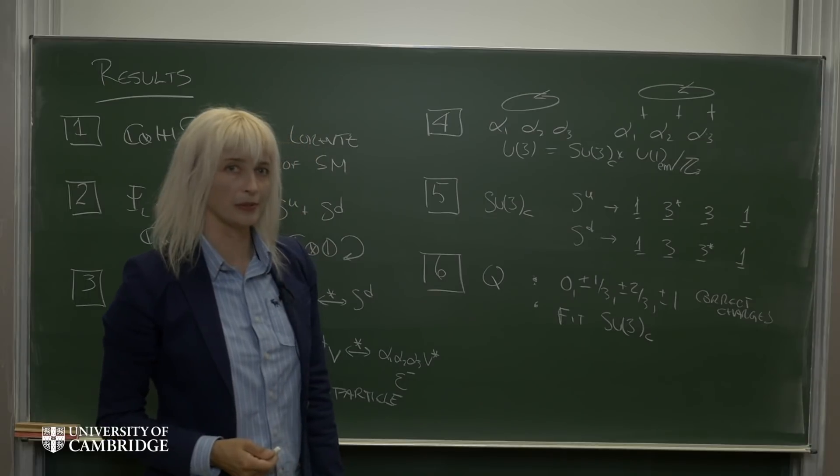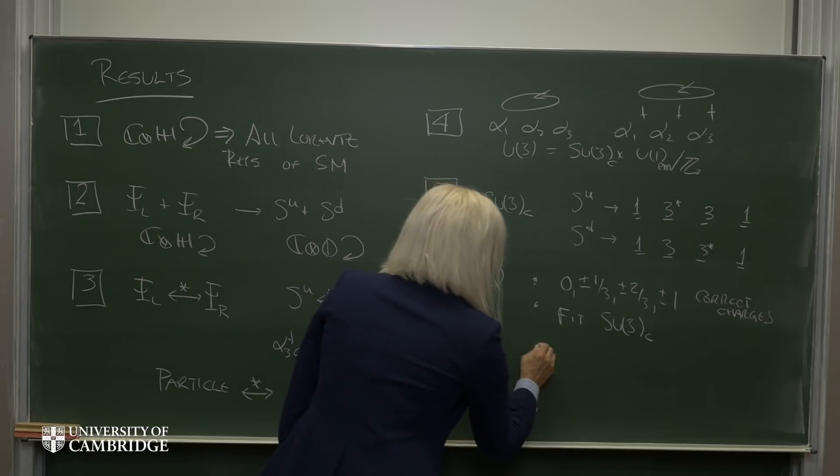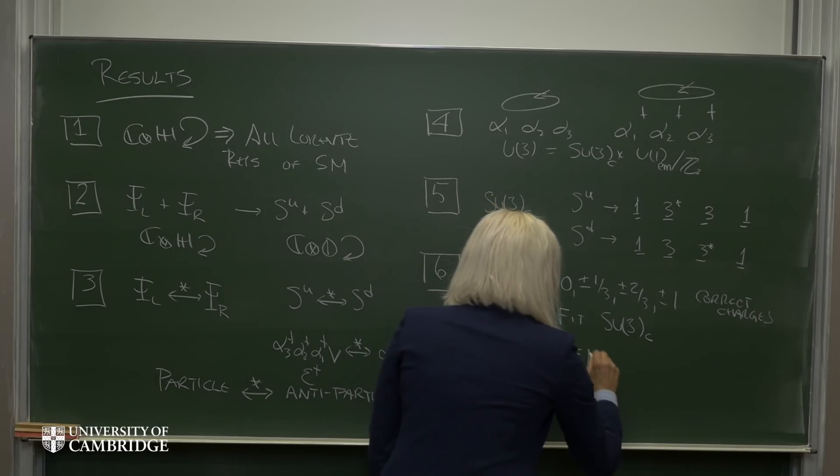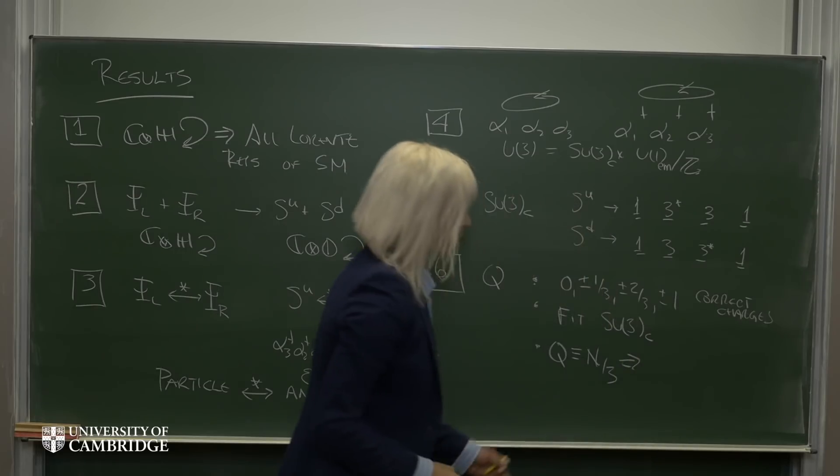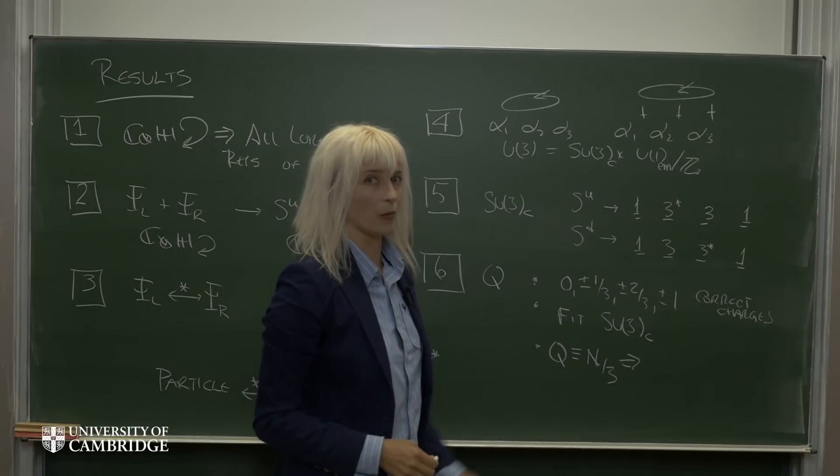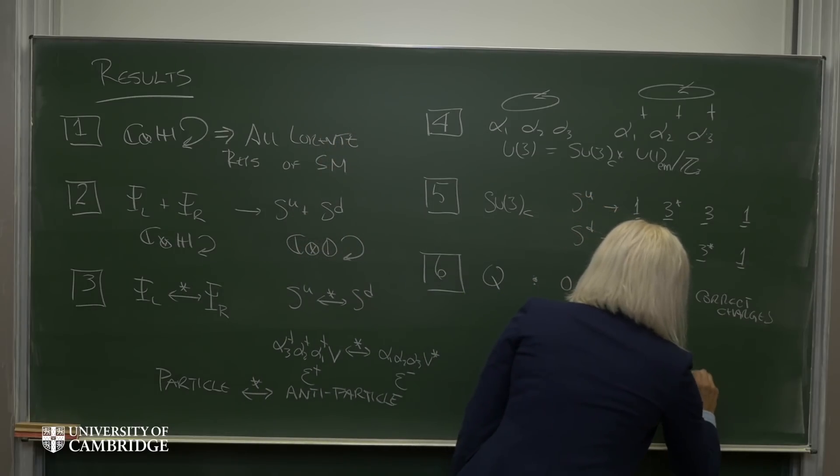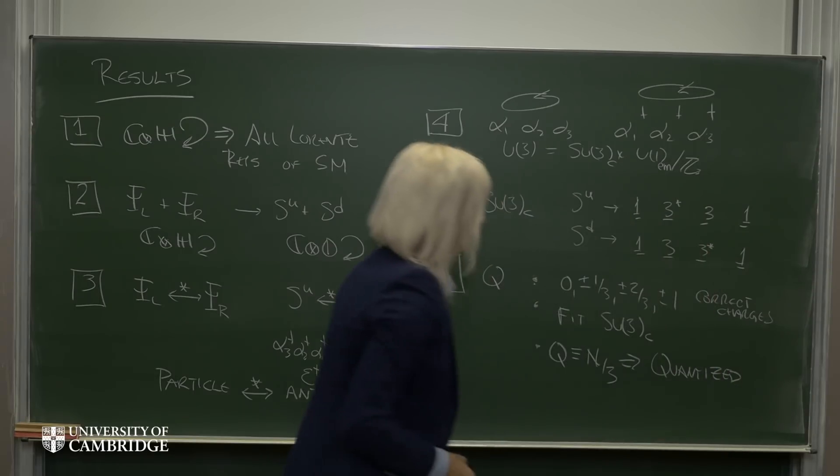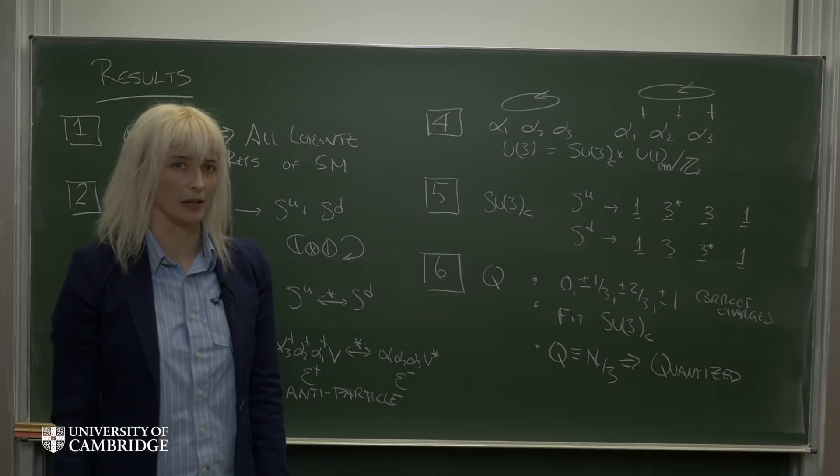And finally, we were able to define our electric charge operator, Q, as the number operator divided by 3. This offers us a straightforward explanation as to why electric charge is quantized. That is, electric charge is quantized because number operators can only take on integer values.